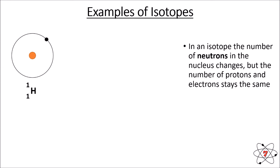But the number of neutrons in an atom is variable. Here we've got your typical version of hydrogen: one proton, one electron, no neutrons. It is possible to change the number of neutrons, and when we do we have what we call a different isotope. This is protium — one proton, zero neutrons, one electron — the classic version of hydrogen.